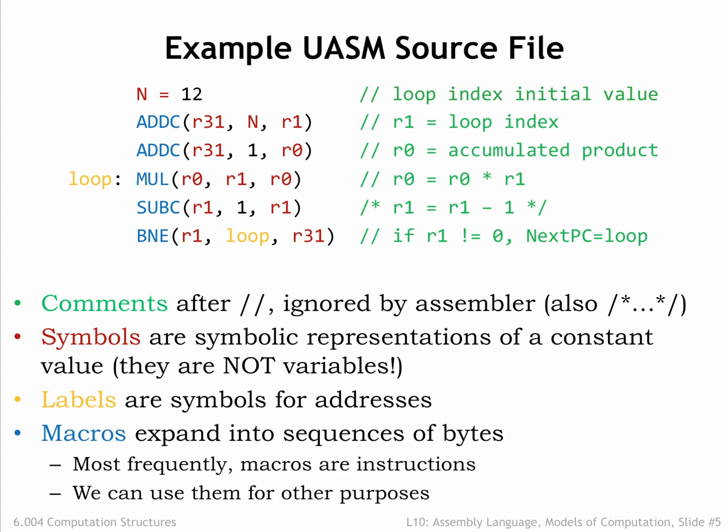We use macro invocations, shown in blue, when we want to write beta instructions. When the assembler encounters a macro, it expands the macro, replacing it with a string of text provided in the macro's definition. During expansion, the provided arguments are textually inserted into the expanded text at locations specified in the macro definition. Think of a macro as shorthand for a longer text string we could have typed in. We'll show how all this works in the next video segment.